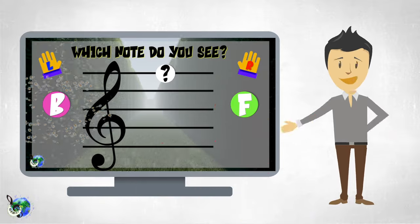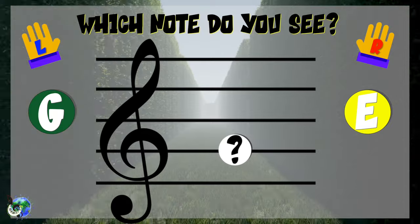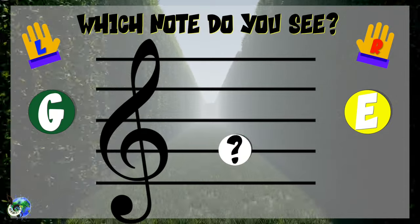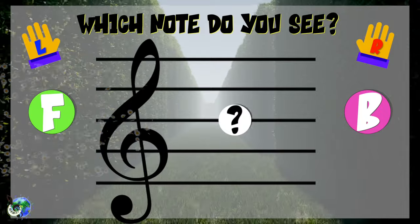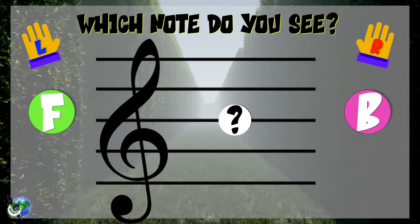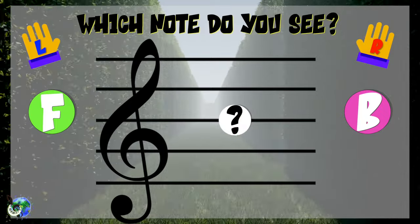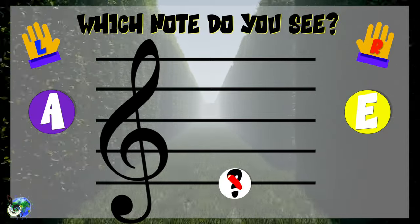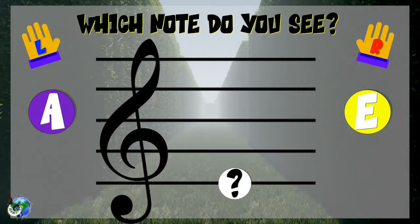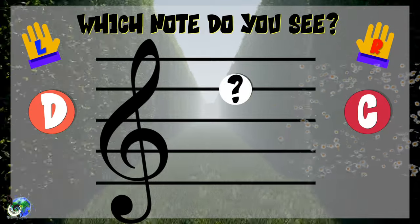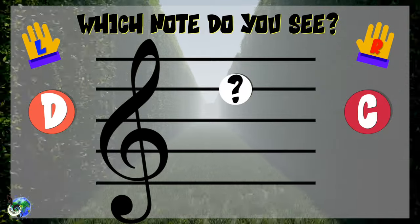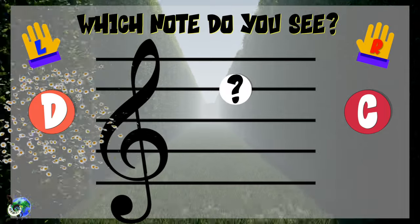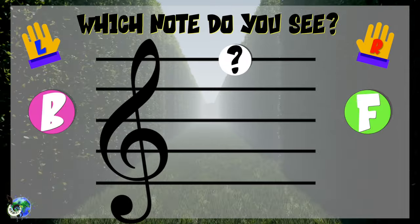Here we go! Which note do you see? 3, 2, 1 — G. Which note do you see? 3, 2, 1 — B. Which note do you see? 3, 2, 1 — E. Which note do you see? 3, 2, 1 — D.